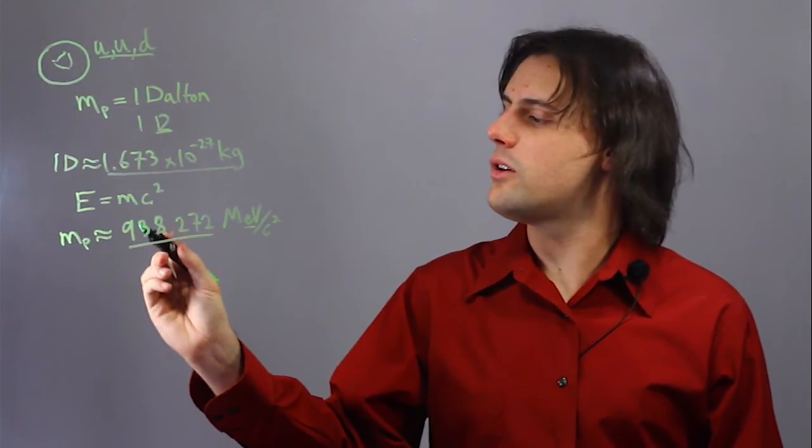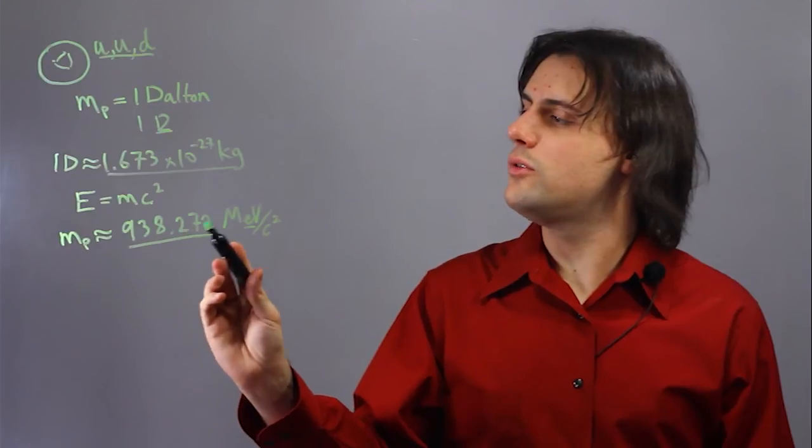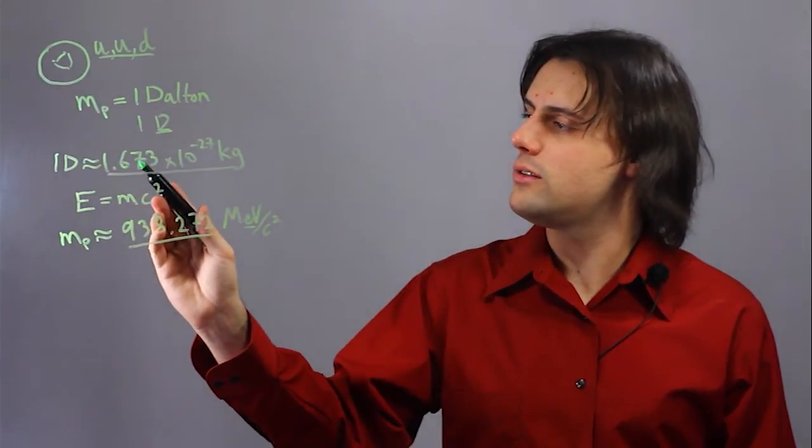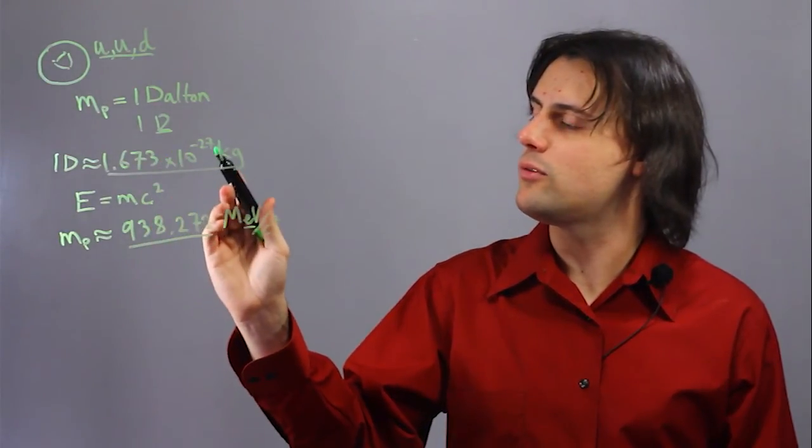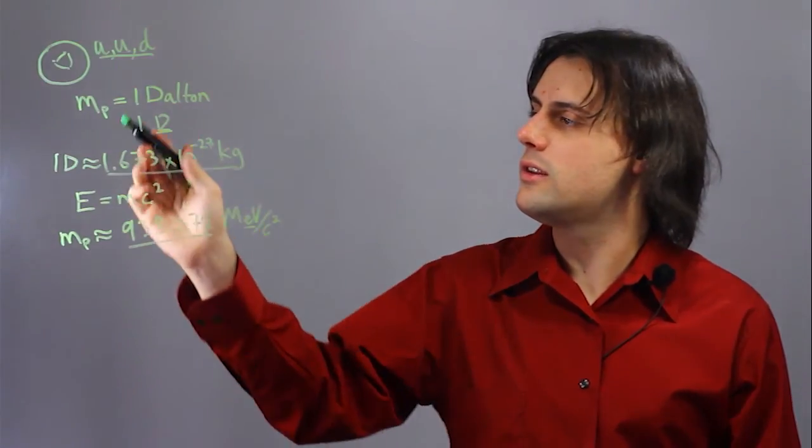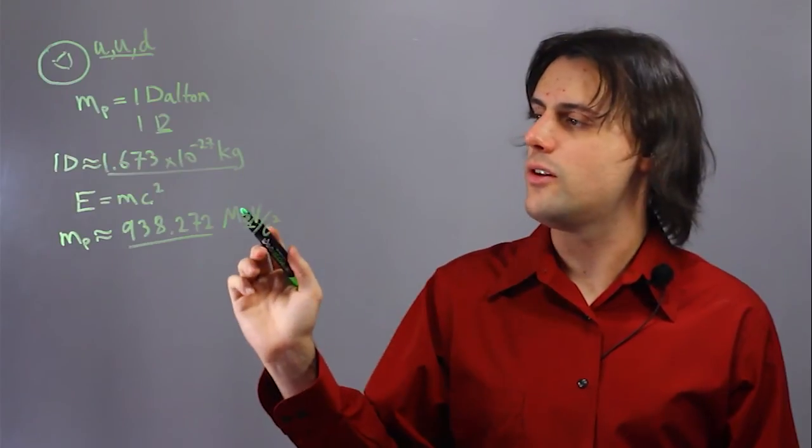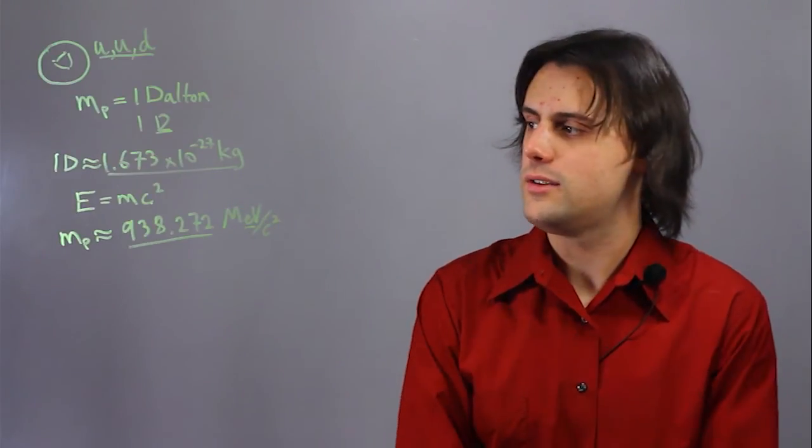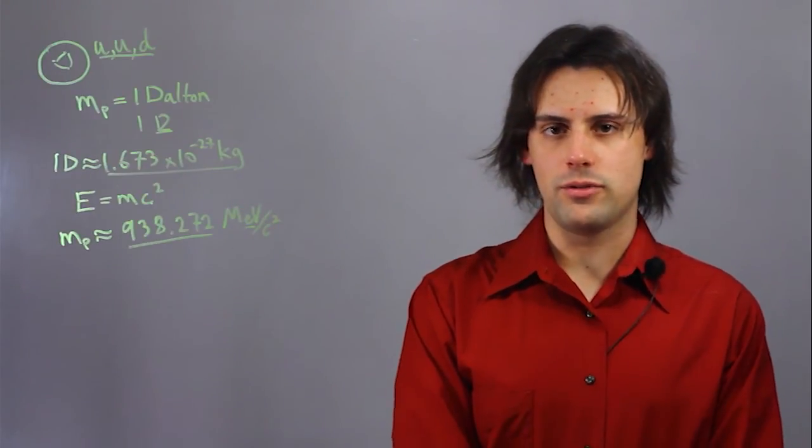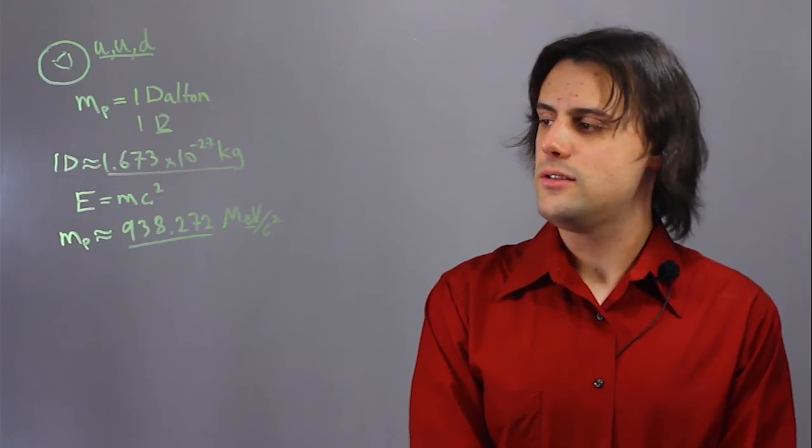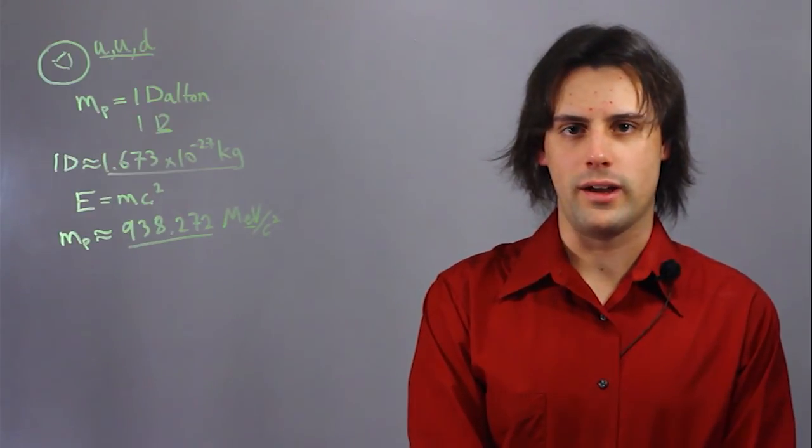So either 938.272 MeV/c², or 1.673 times 10 to the negative 27 kilograms, or one dalton—these three are equivalent expressions for the mass of a proton when it's at rest. My name is Walter Unglaub and this is Mass of a Proton at Rest.